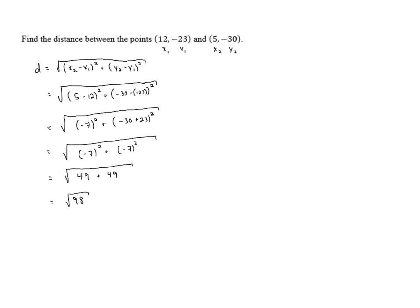Now 98 isn't a perfect square but it contains a perfect square factor. 98 is 49 times 2. So we can split that up and when we take the square root of 49 we end up with 7. And so the distance between those points is 7√2.